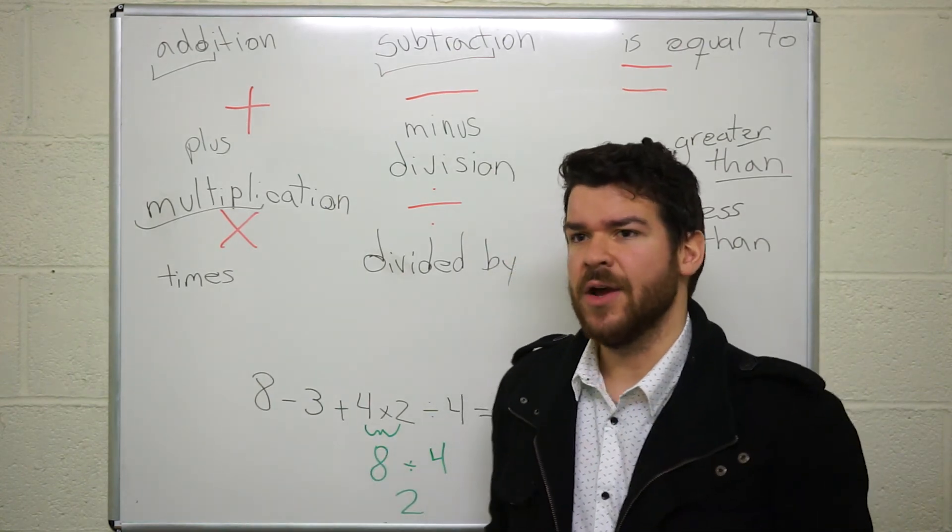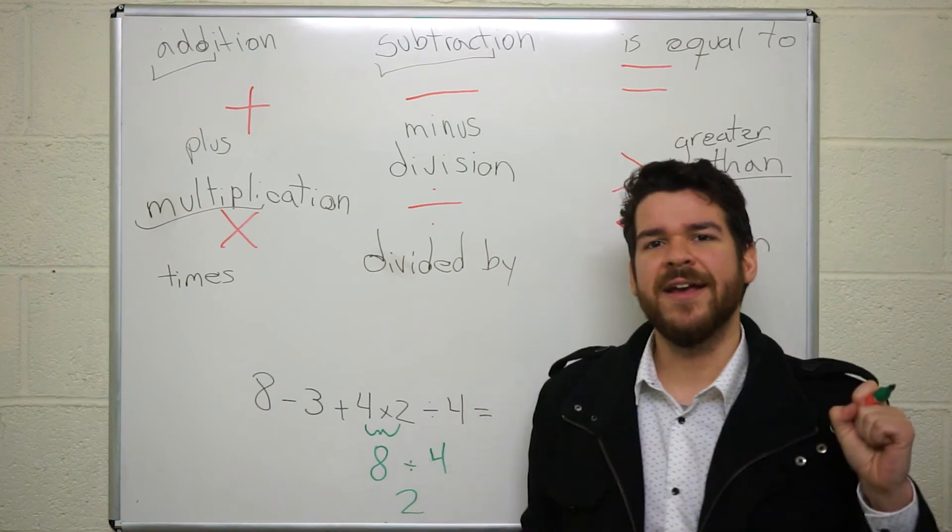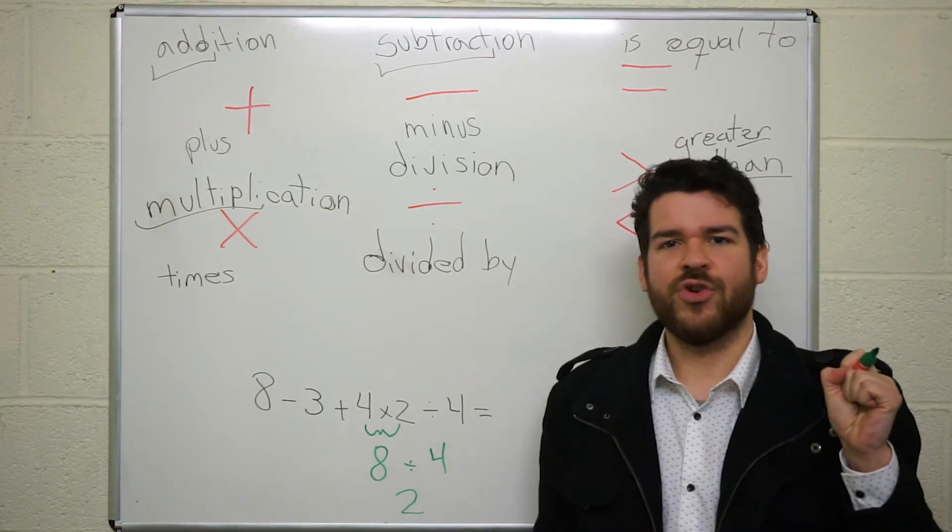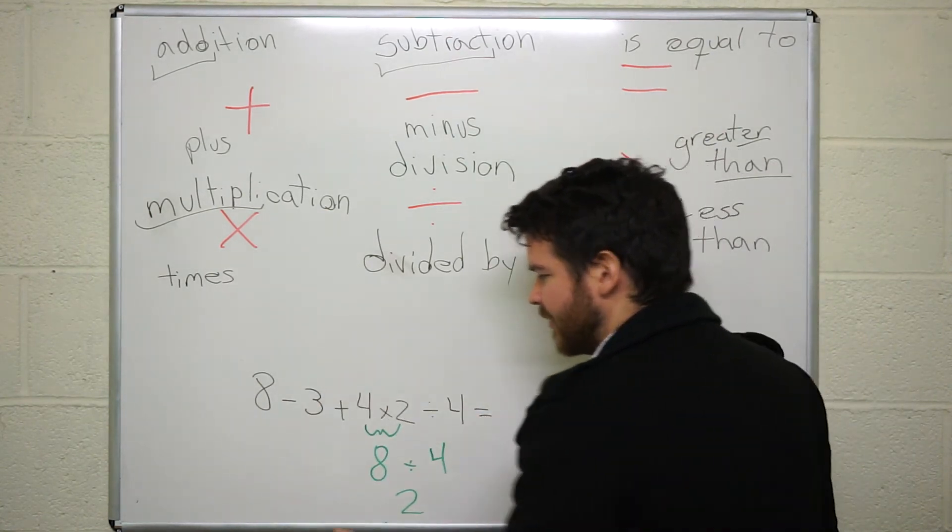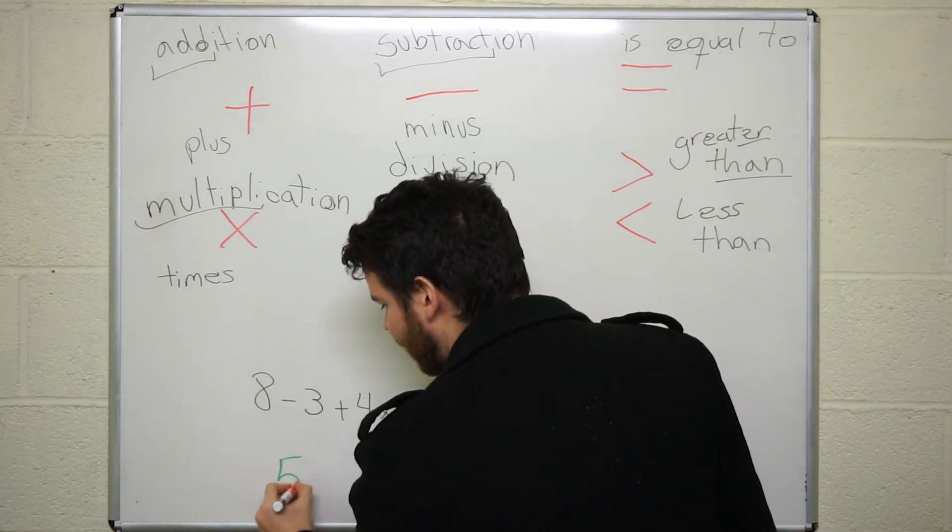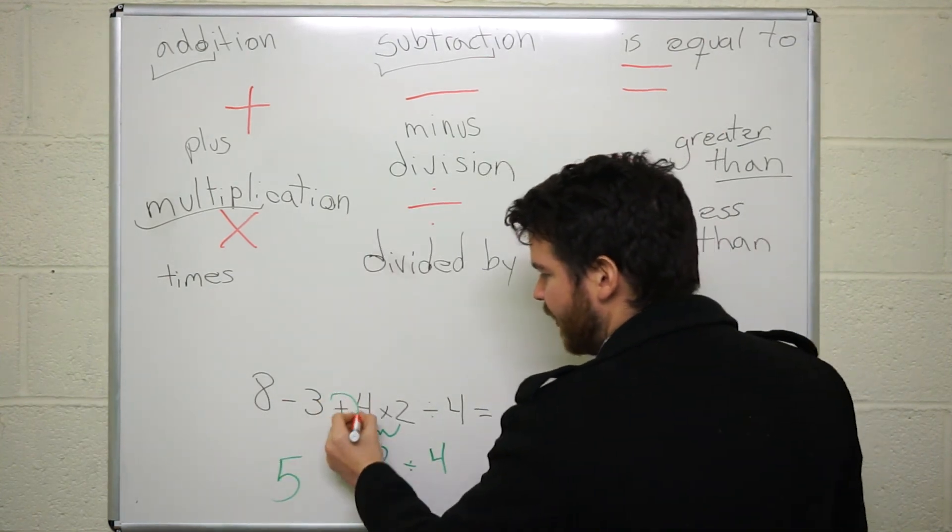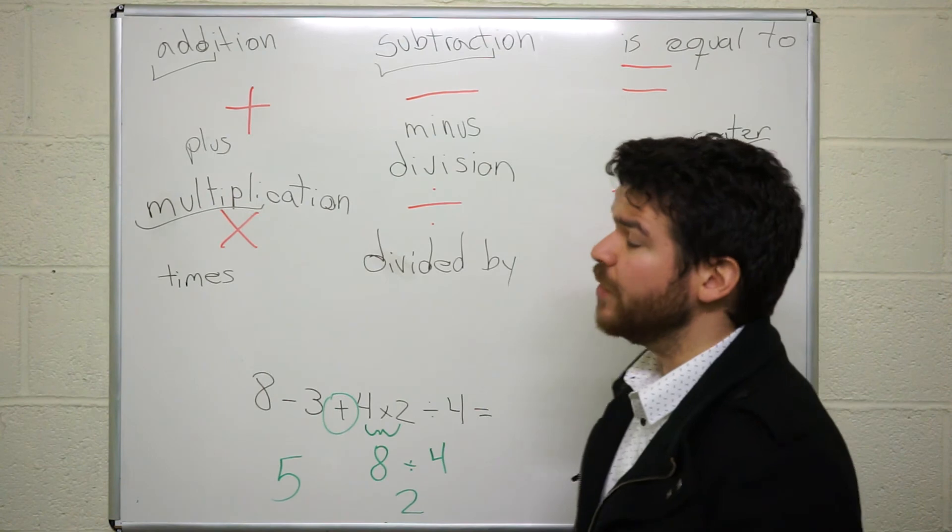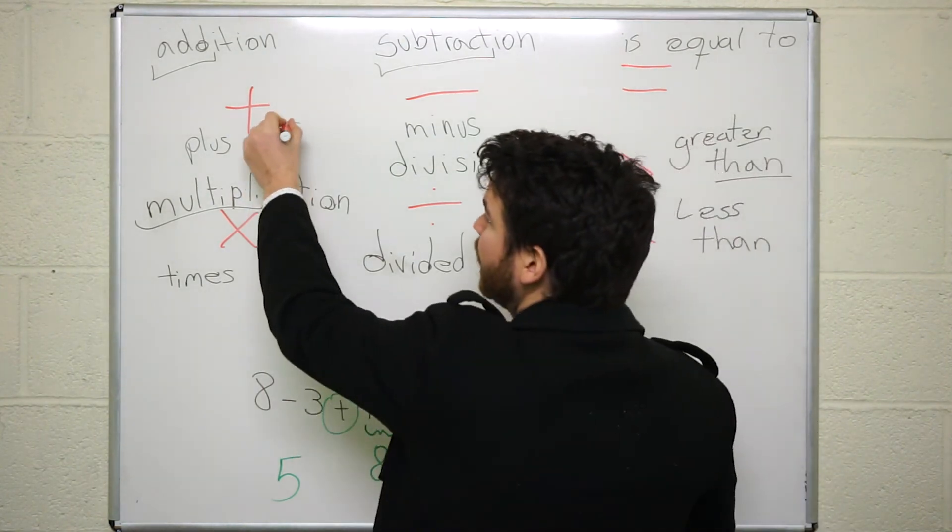Eight minus three, or you can say take away three because you're subtracting. So eight minus three, we have five. Now we have this plus here. We have to do the sum. Remember? Sum.